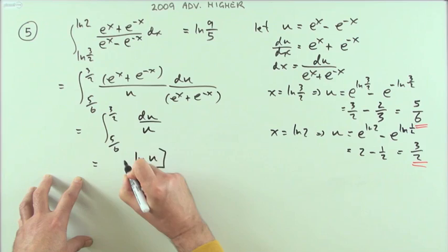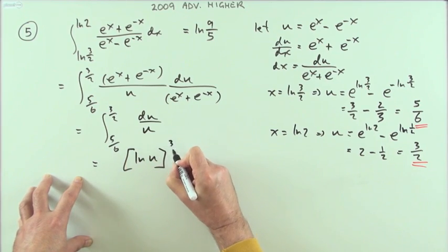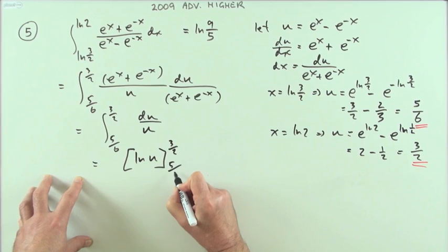So I've got ln(u) to be evaluated twice at 3/2 and at 5/6.